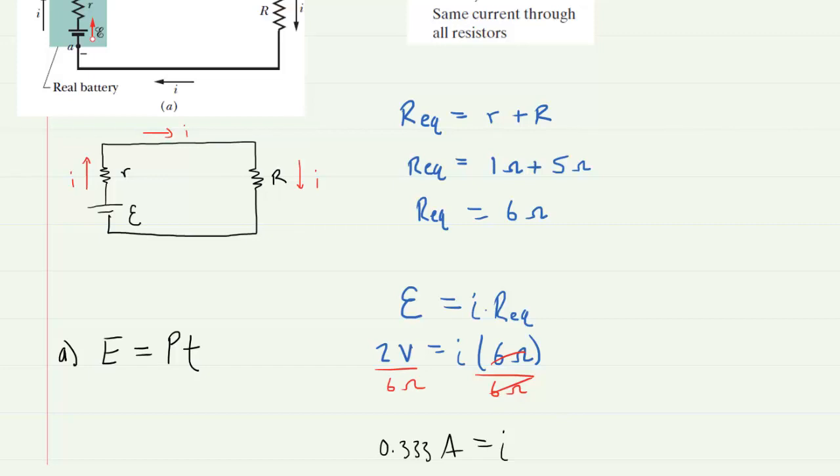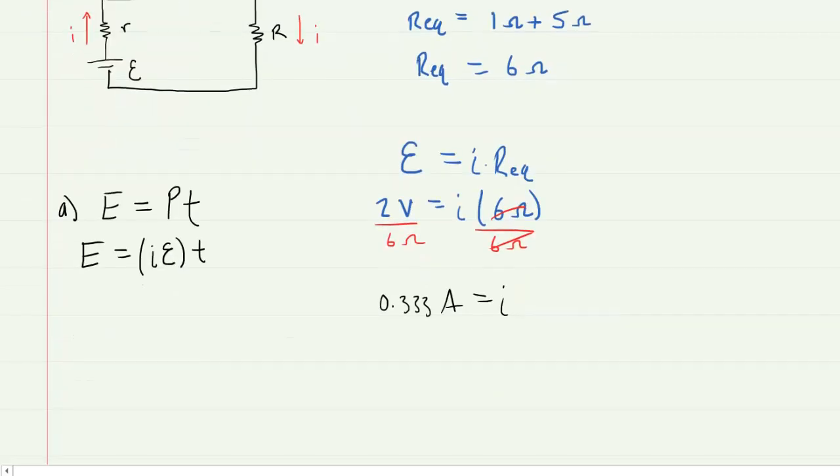And in this question, the time was given to us as 2 minutes, so we know that. It's the power that's going to be a little bit challenging for us here. But the power that is delivered by the battery is the current multiplied by the EMF of the battery. So we can actually make that substitution. And this is why it was advantageous for us to have found the current earlier.